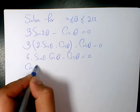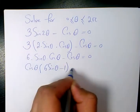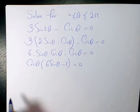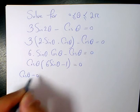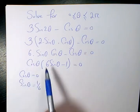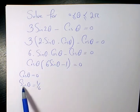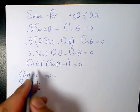Now I can factor cosine theta. It's going to be cosine theta times 6 sine theta minus 1 equals 0. Now we have two cases: when cosine theta is 0, and when sine theta is 1 over 6. Because 6 sine theta minus 1 equals 0 means that sine theta is 1 over 6.